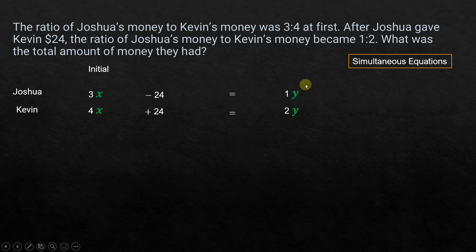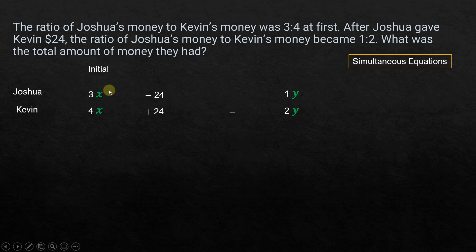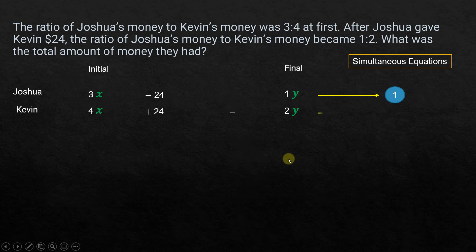After the change, Joshua has 1y and Kevin has 2y. So the initial ratio, the change, and the final ratio together form two equations: Equation 1: 3x − 24 = 1y, and Equation 2: 4x + 24 = 2y.